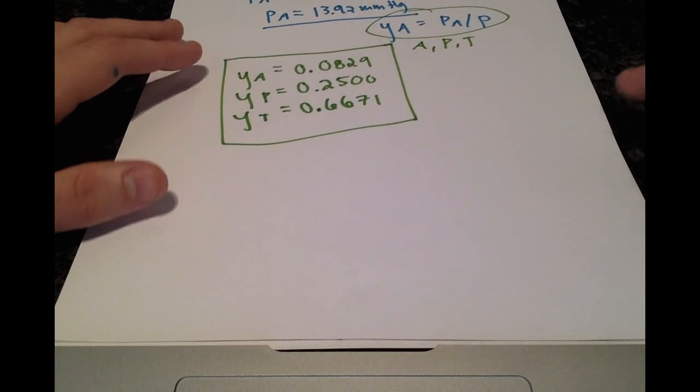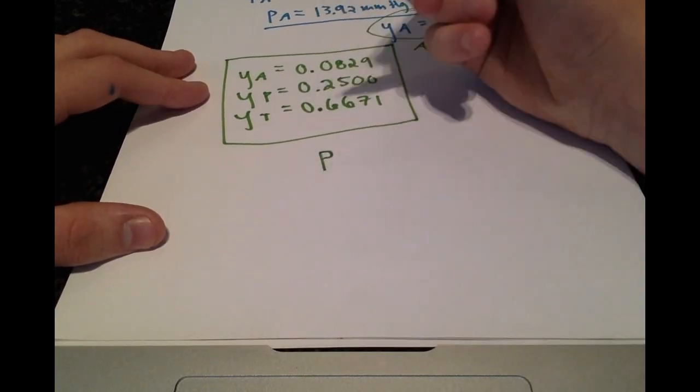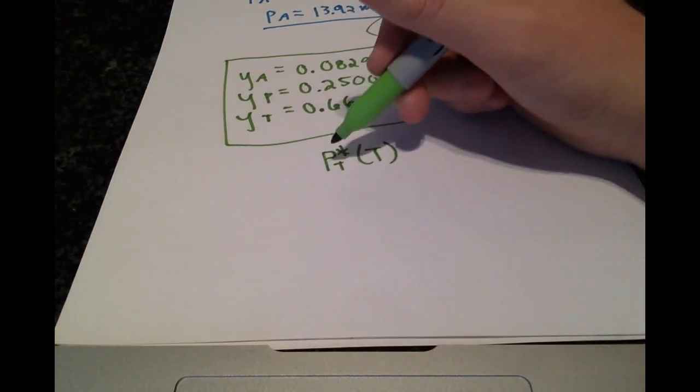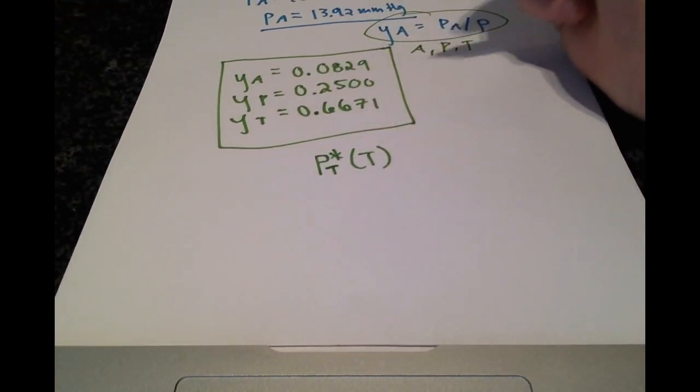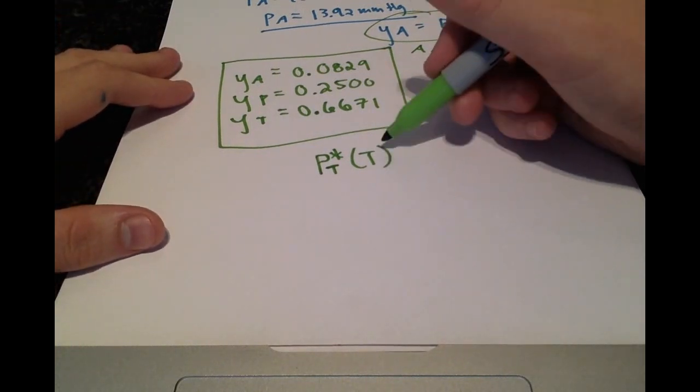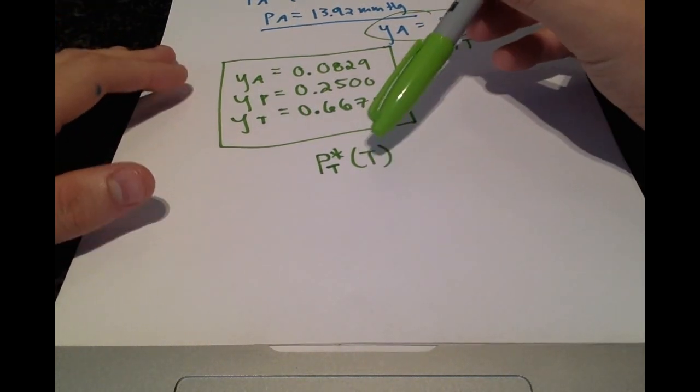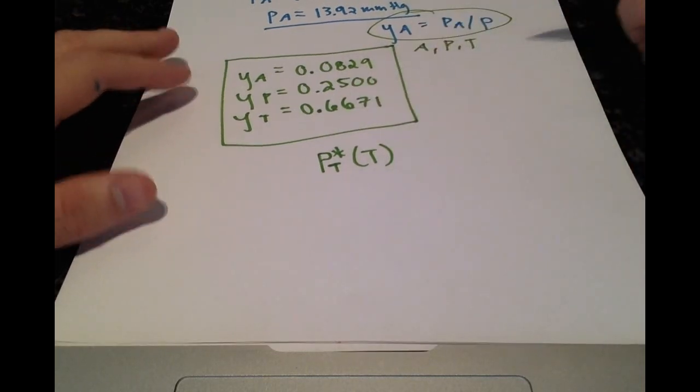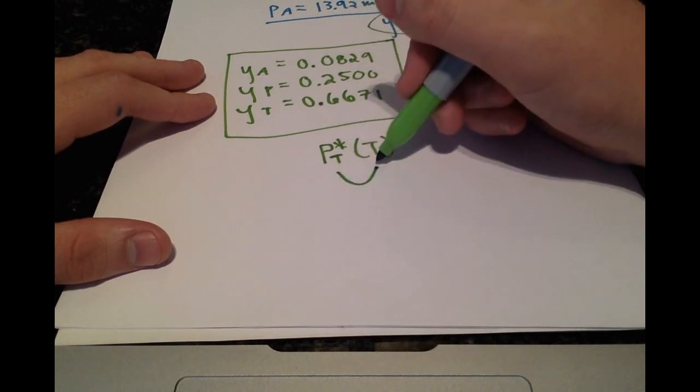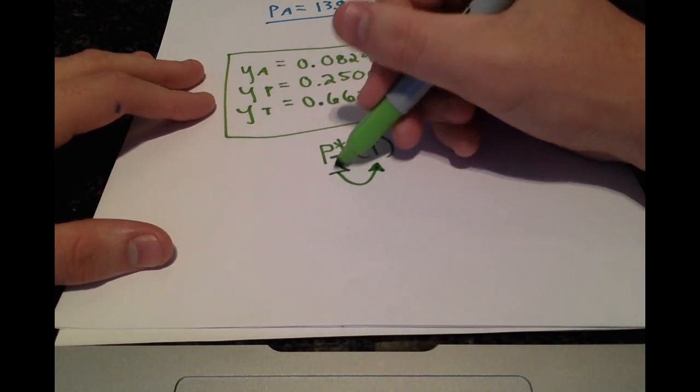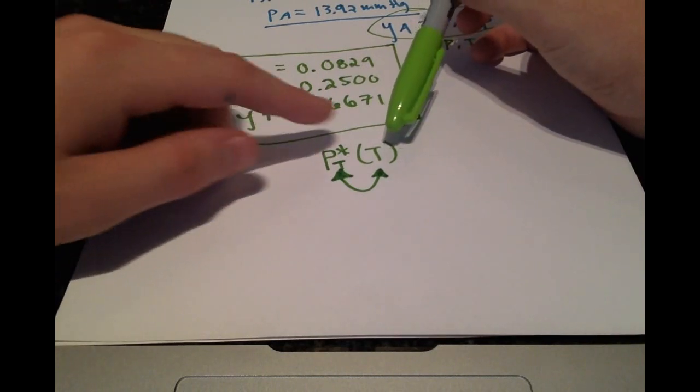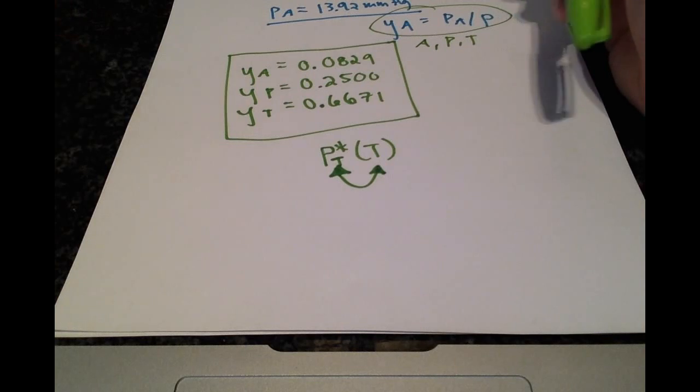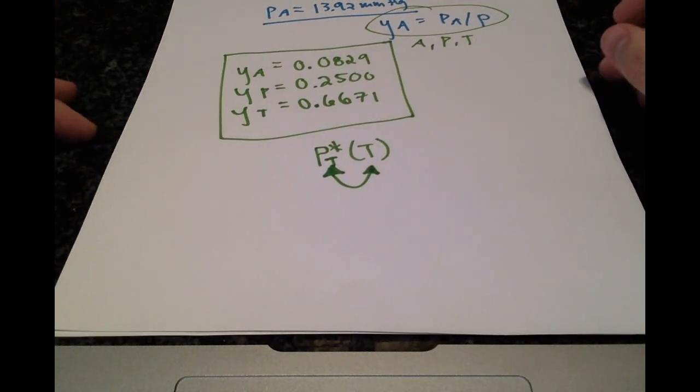Okay, so we are missing one value, one of the vapor pressures, and it's for toluene. And we don't know the temperature. If we did, we could just plug in the temperature and our other constants, and we would get our vapor pressure. But we do know one thing. We know that both of these are related. We've seen in previous videos that we can write the vapor pressure in terms of temperature and the temperature in terms of vapor pressure. Okay, so let's take a look at that.